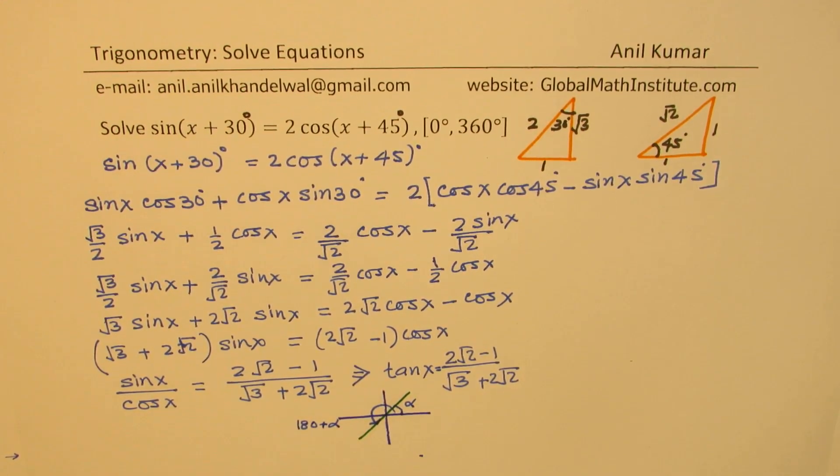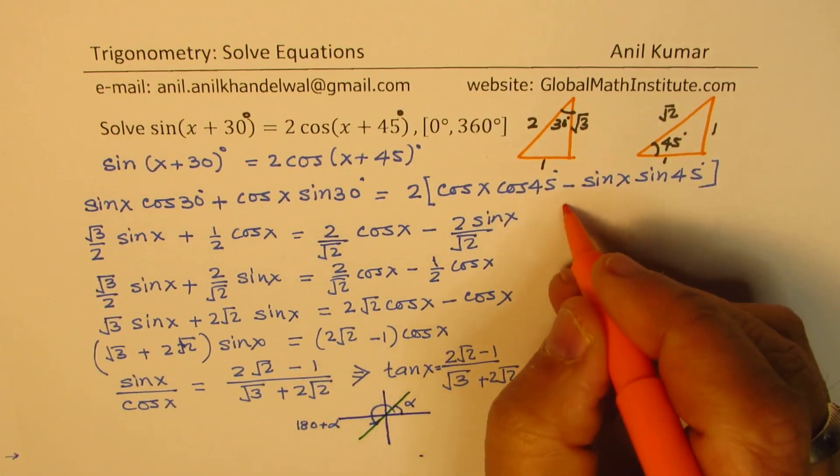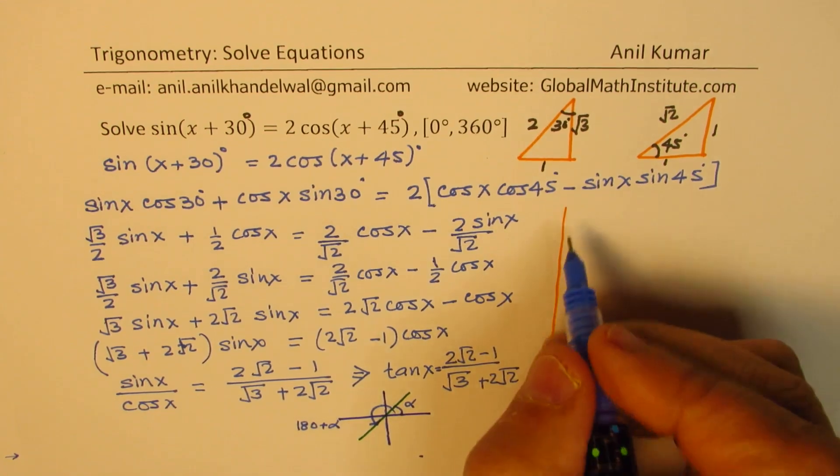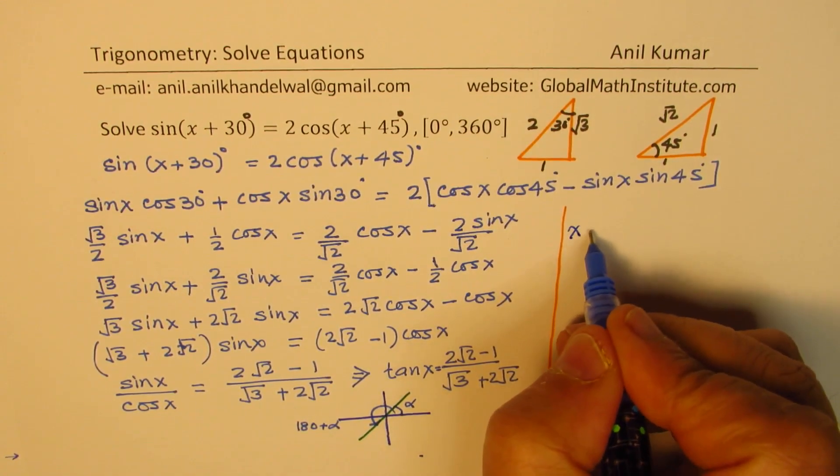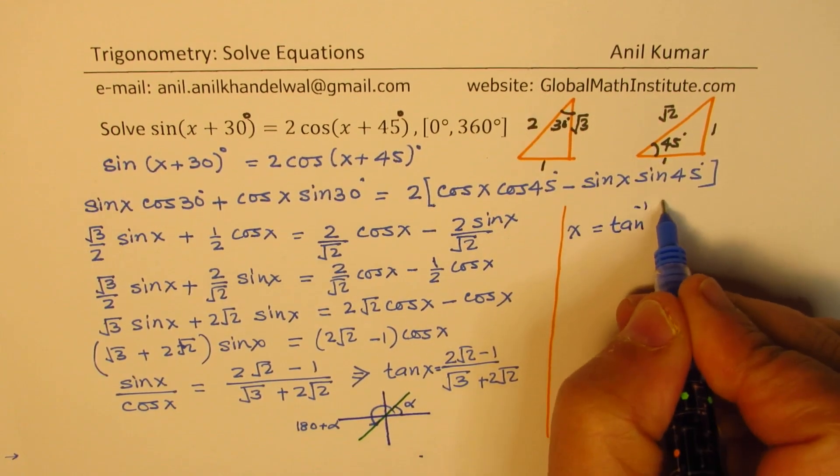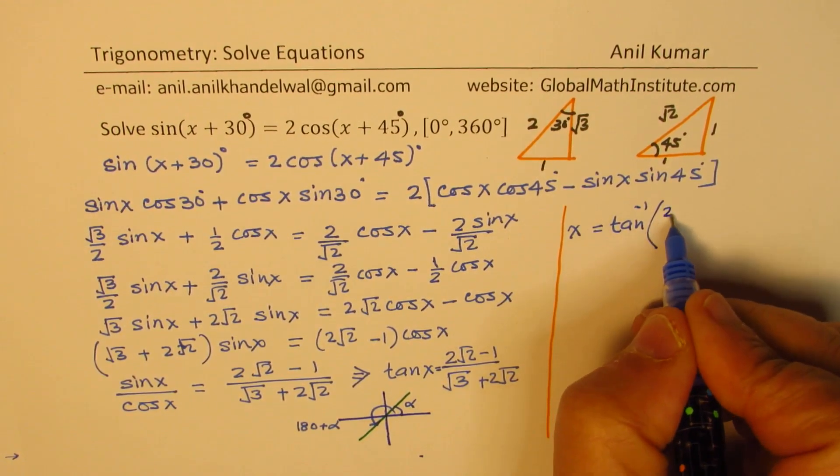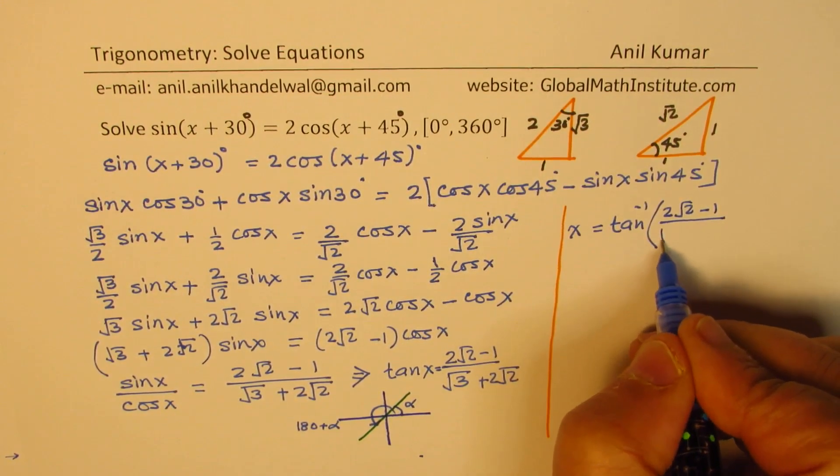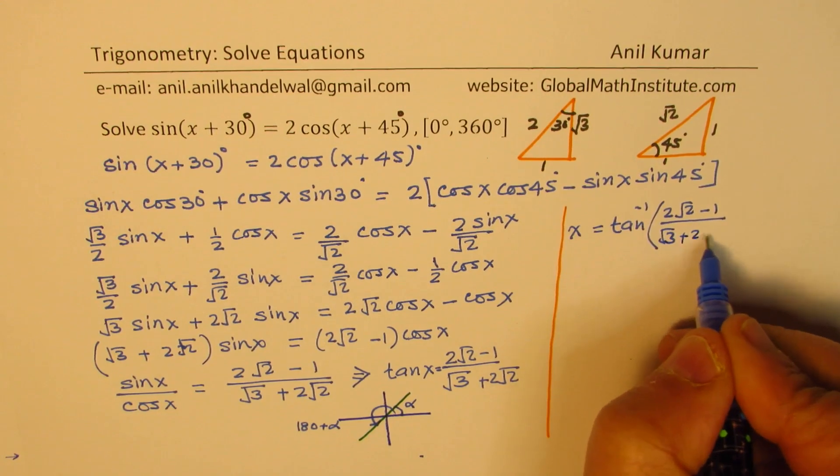So those will be our answers. So let's use the calculator to figure this out. So the value of x, we can say, is tan inverse of (2√2 - 1)/(√3 + 2√2).